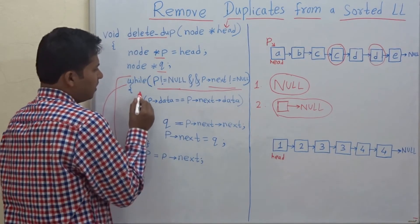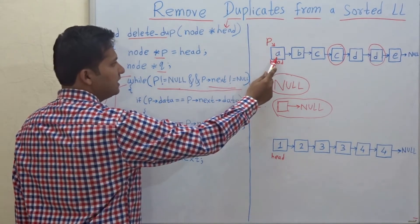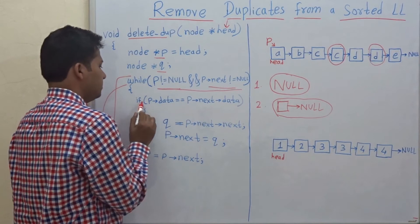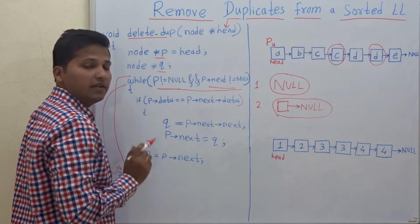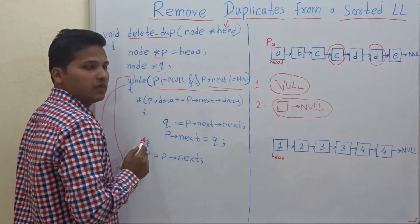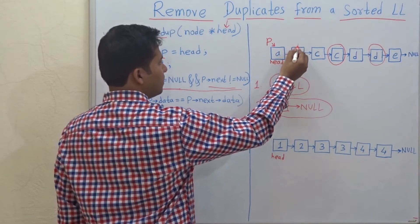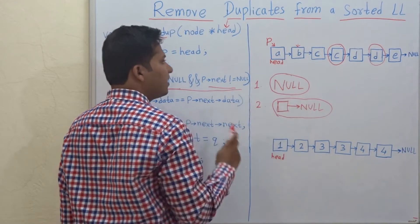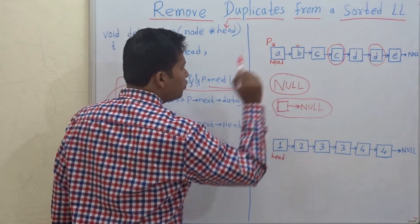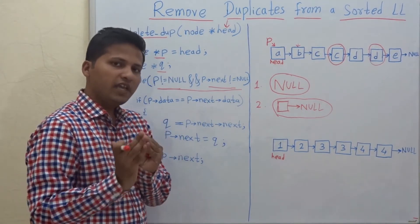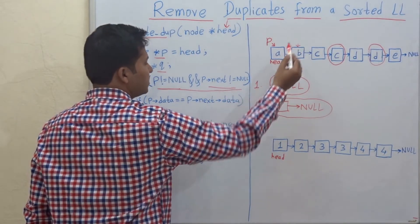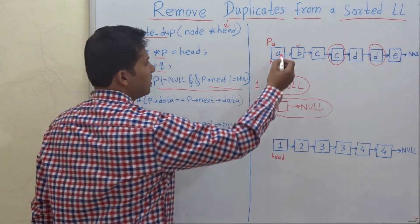While P is not equal to null and P->next is not equal to null, we check: if P->data is equal to P->next->data — meaning if the data of P equals the data of the next node. If these two consecutive nodes have the same data, that means it is a duplicate. Remember this is a sorted linked list, so if there are duplicates they will always be consecutive. We check consecutive nodes to see if they are the same.